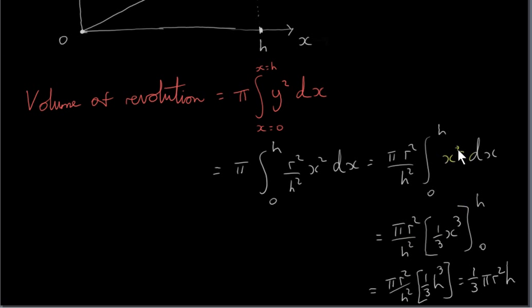To integrate X squared, we add 1 onto the power to get X cubed, then we divide by the new power, so we have 1 third. We apply our limits. We plug H in for X, so we get π R squared over H squared times 1 third H cubed. Then we put down a minus sign and plug in 0, but when we plug in 0, this just becomes 0.